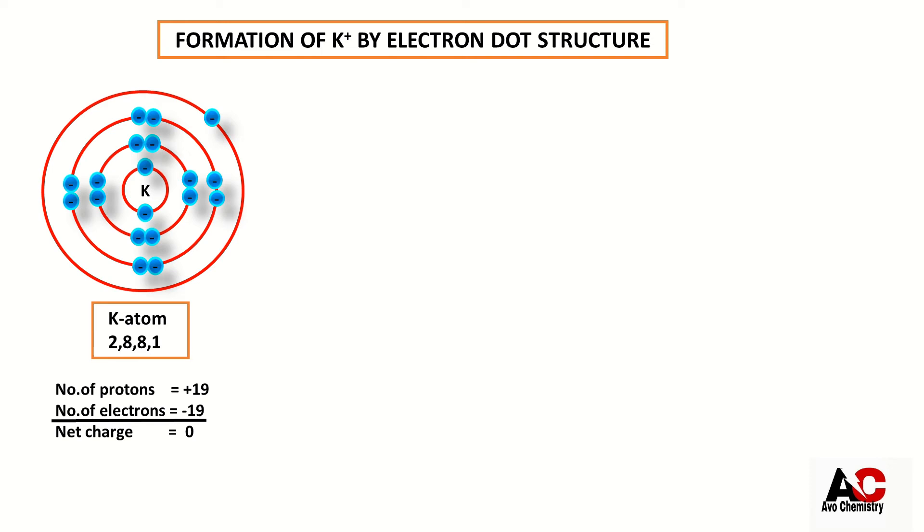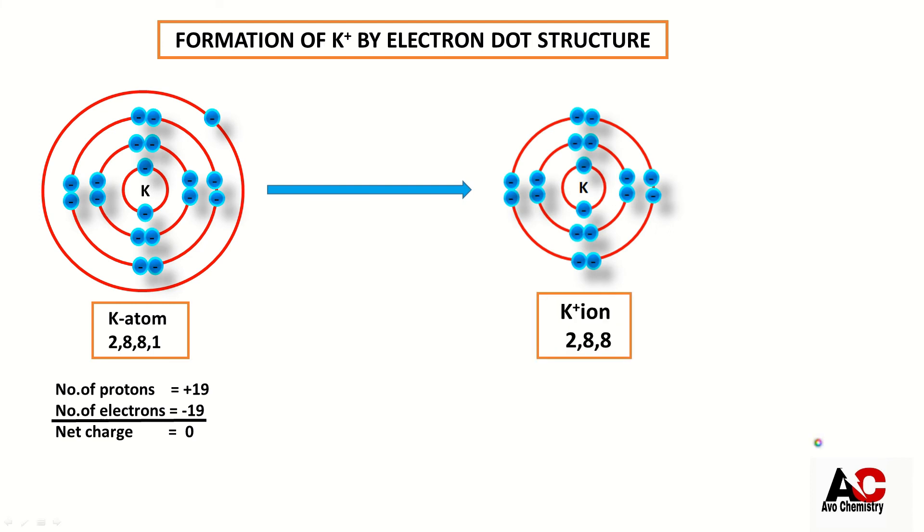Potassium atom loses its valence electron in order to gain stability. After removing the electron, its structure becomes like this with electronic arrangement 2, 8, 8. Now the third shell has become its last shell that has 8 electrons, so it is considered stable.